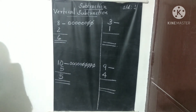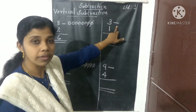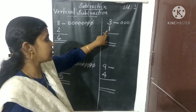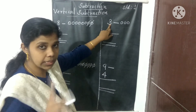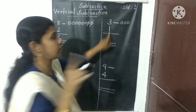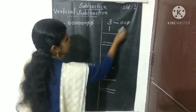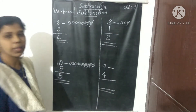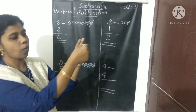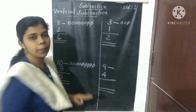Next question: 3 minus 1. Draw 3 beads: 1, 2, 3. That is 3 minus 1 — 1 taken away from 3 objects. Cross out 1 object. What is the balance? Count: 1, 2 — the answer is 2. Using hands: take 3, take away 1. The balance is 2.